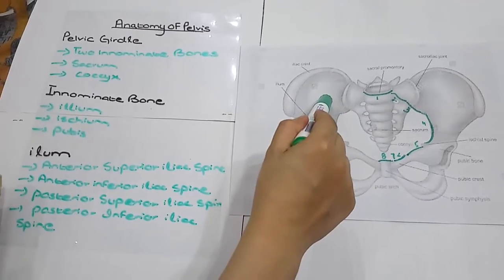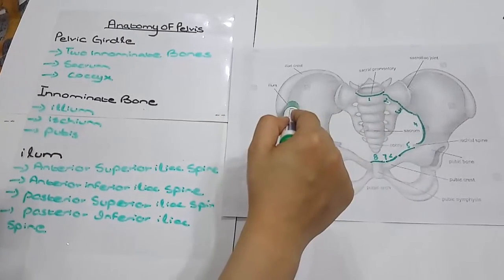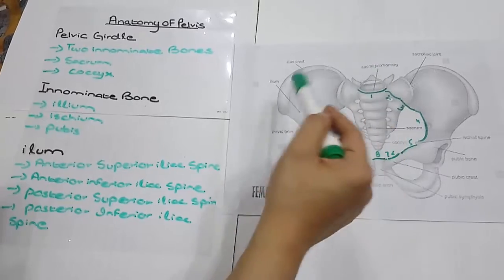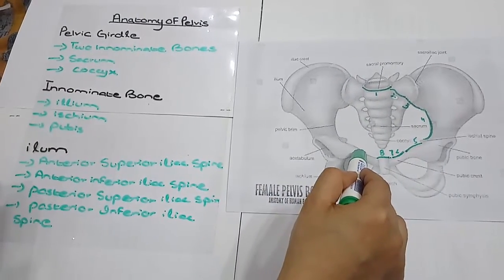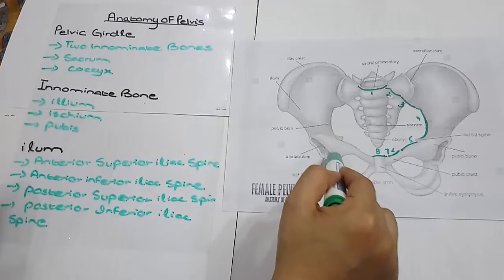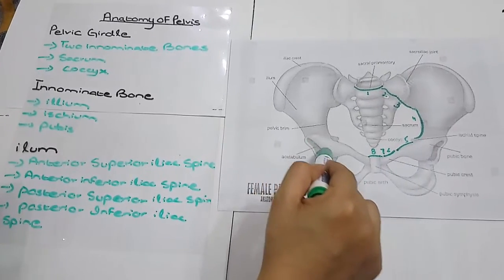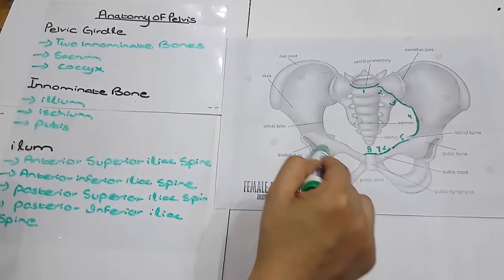Now the innominate bone. Each of this innominate bone consists of three bones: the ileum, ischium and pubis. A large cup-shaped cavity, you could see the acetabulum, is where the head of the femur articulates.